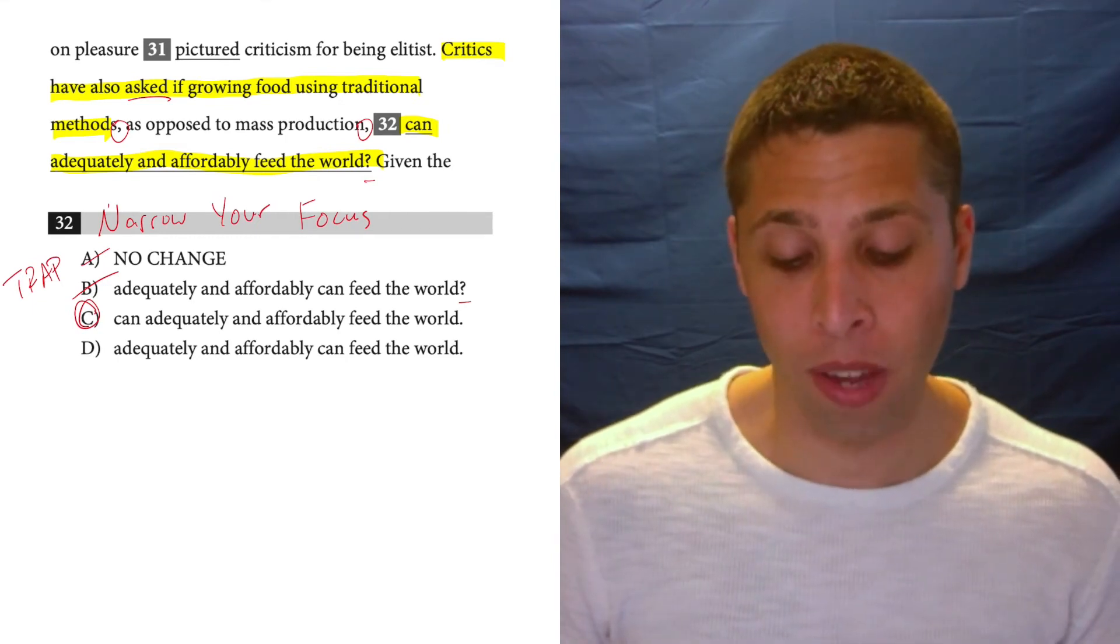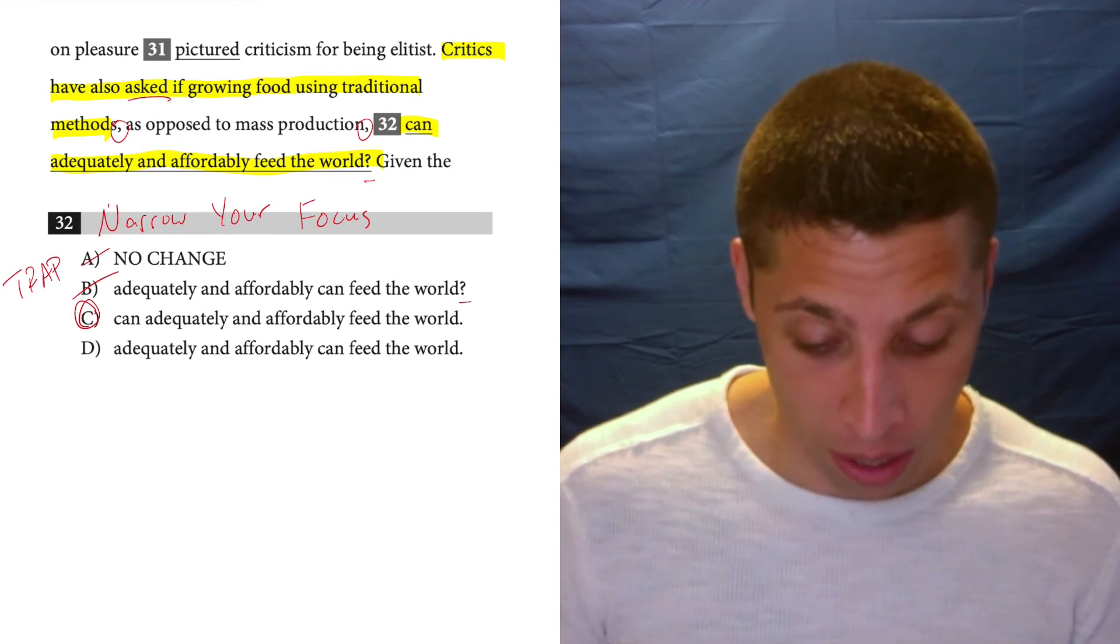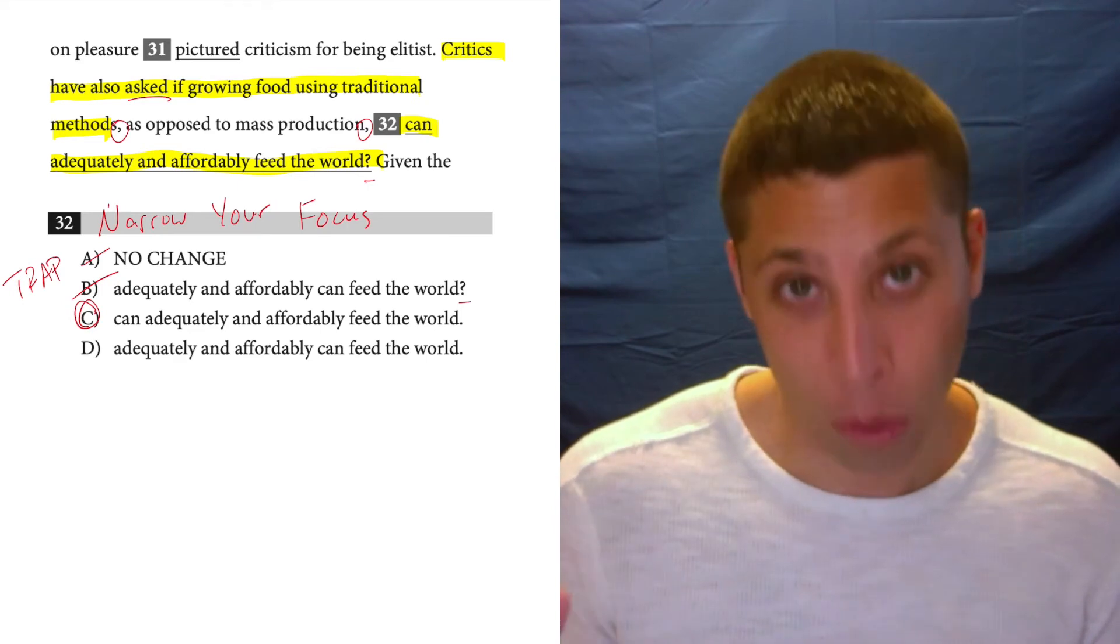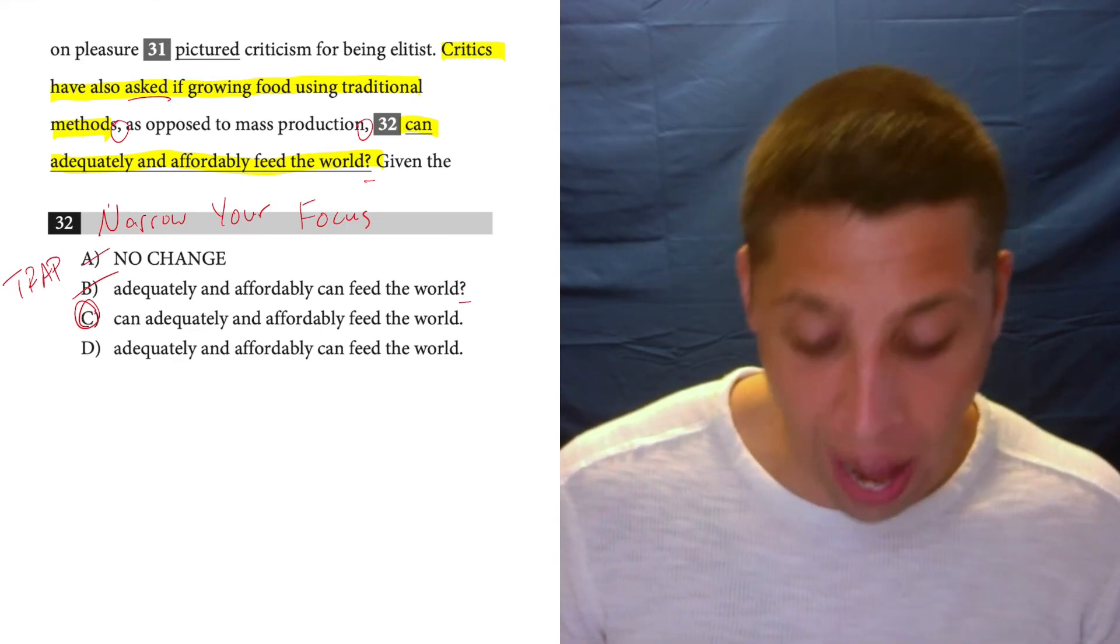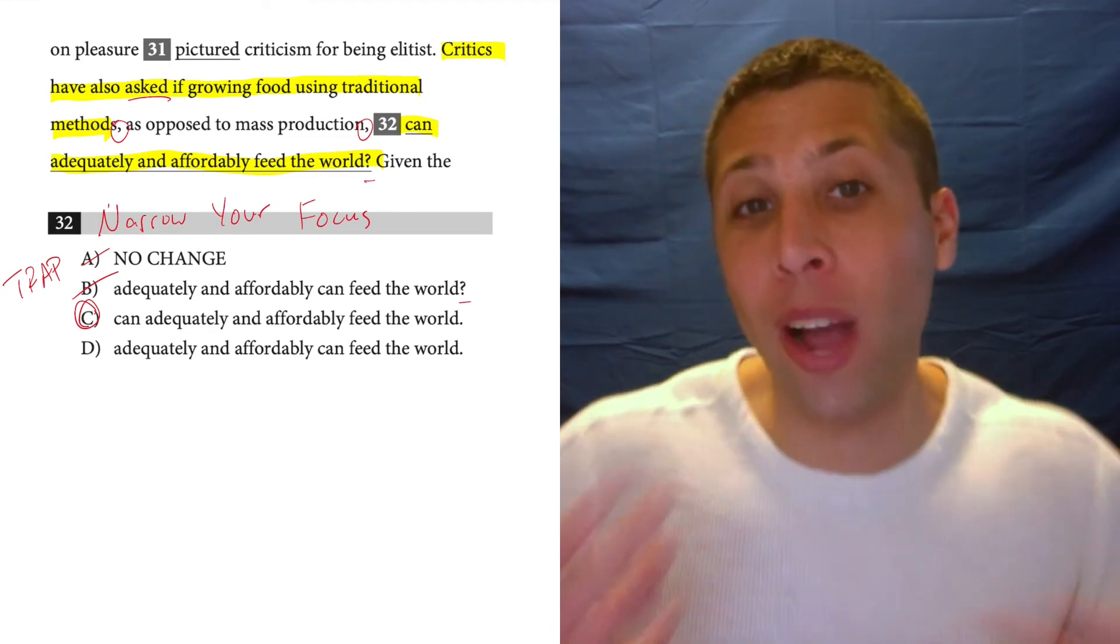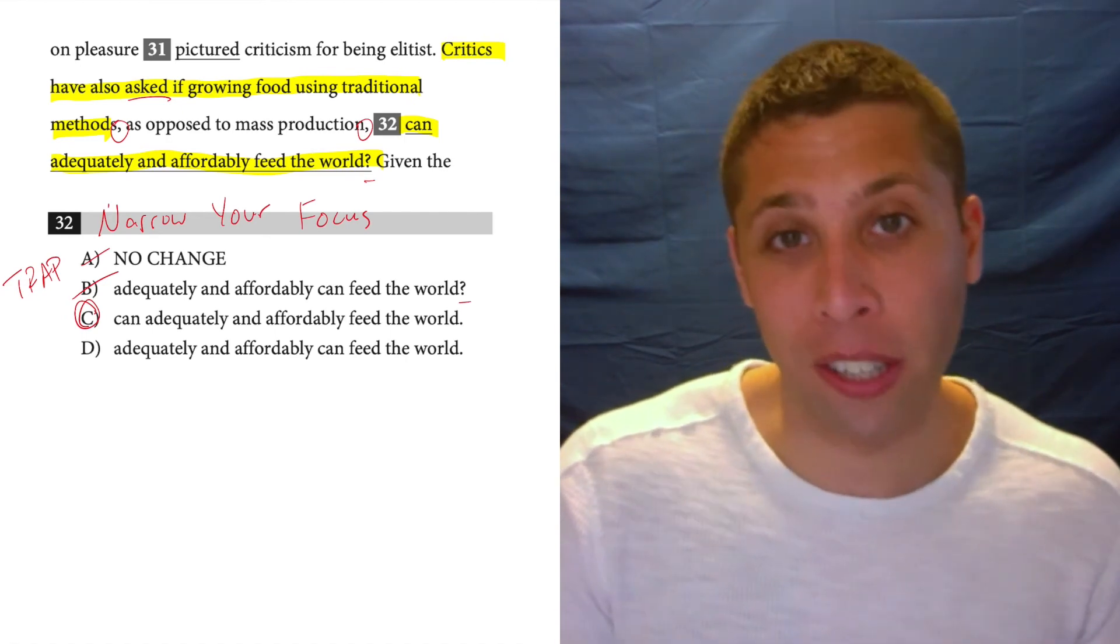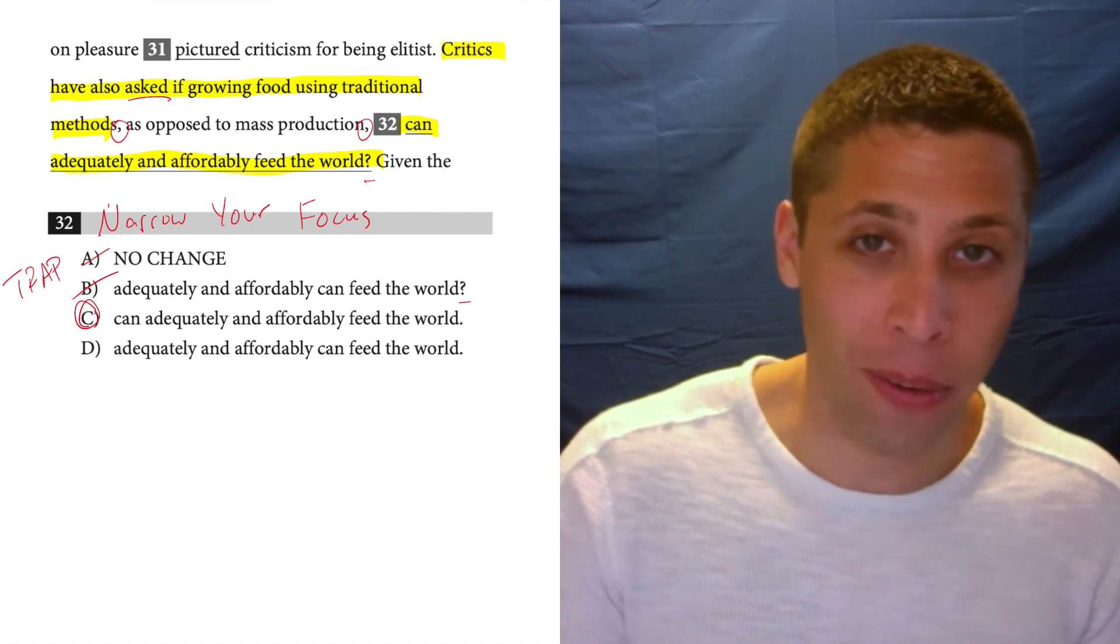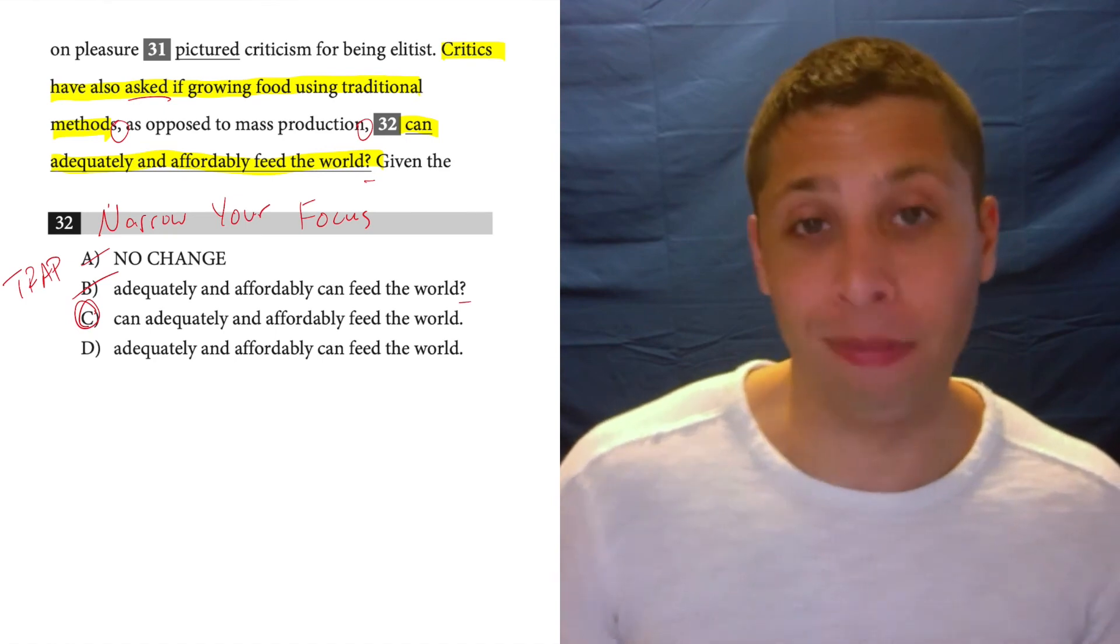There is a way that we could have worded this that would have required a question mark. Critics have also asked, quotation mark, can growing food using traditional methods adequately and affordably feed the world, quotation mark, right? So if we made it into like a question that they were saying, then we could use a question mark at the end of it. But it's not worded that way and so we're not allowed to change all these different things. We've got to work with what we've got and so that means that we're going to leave it as just like a sentence.